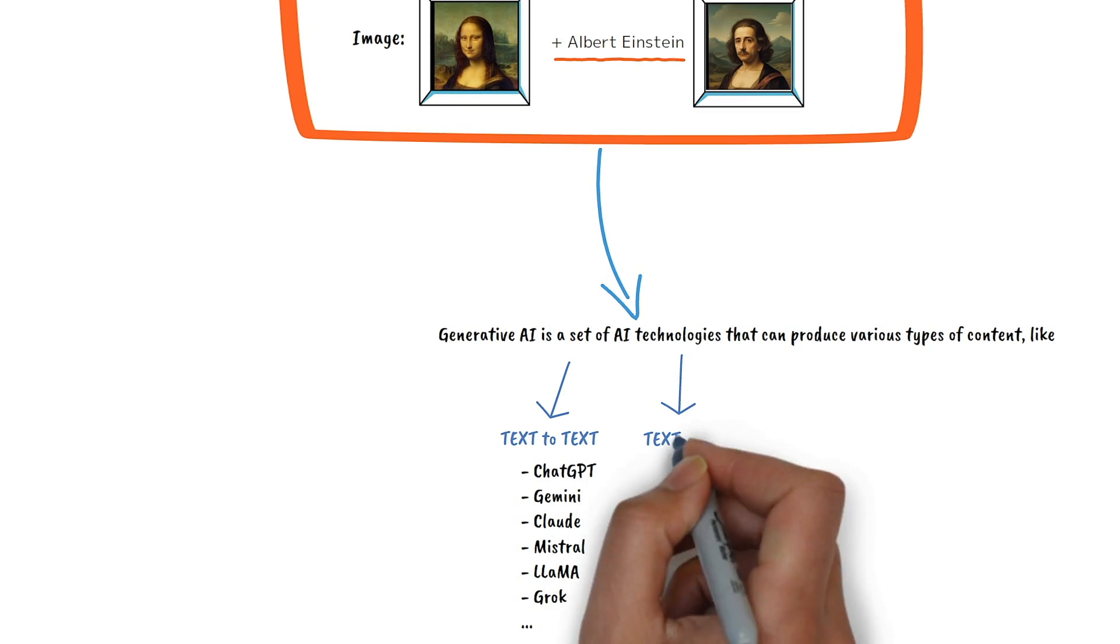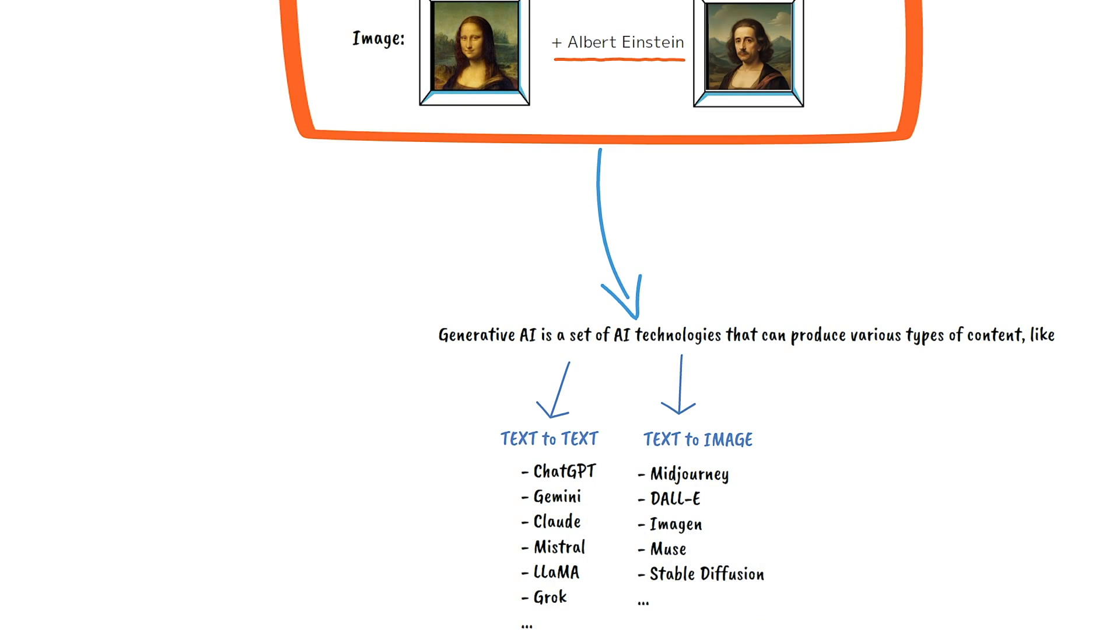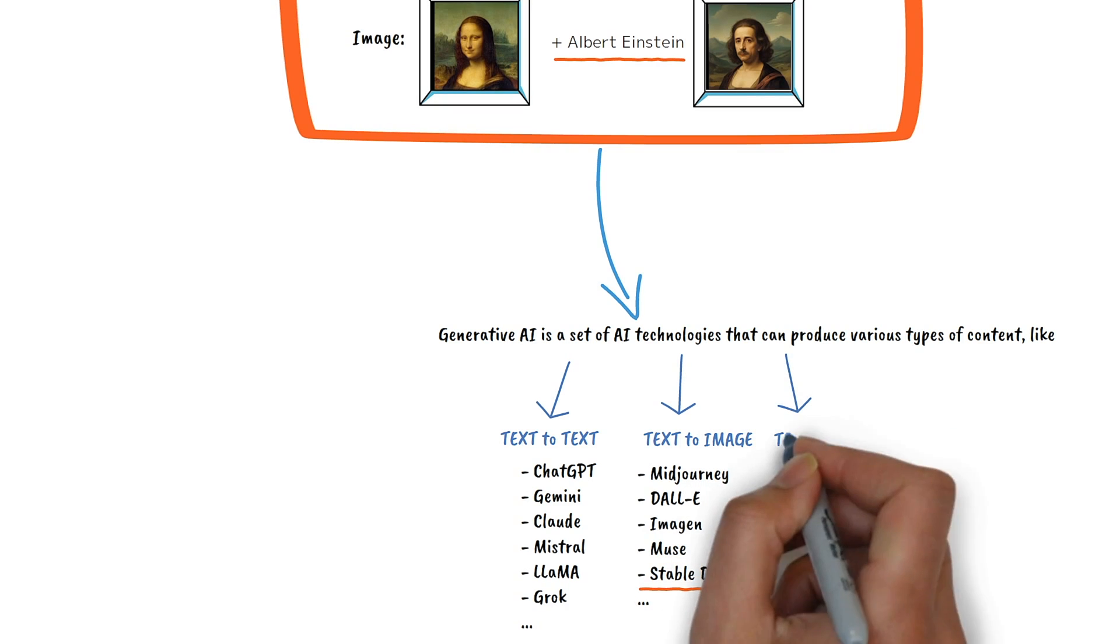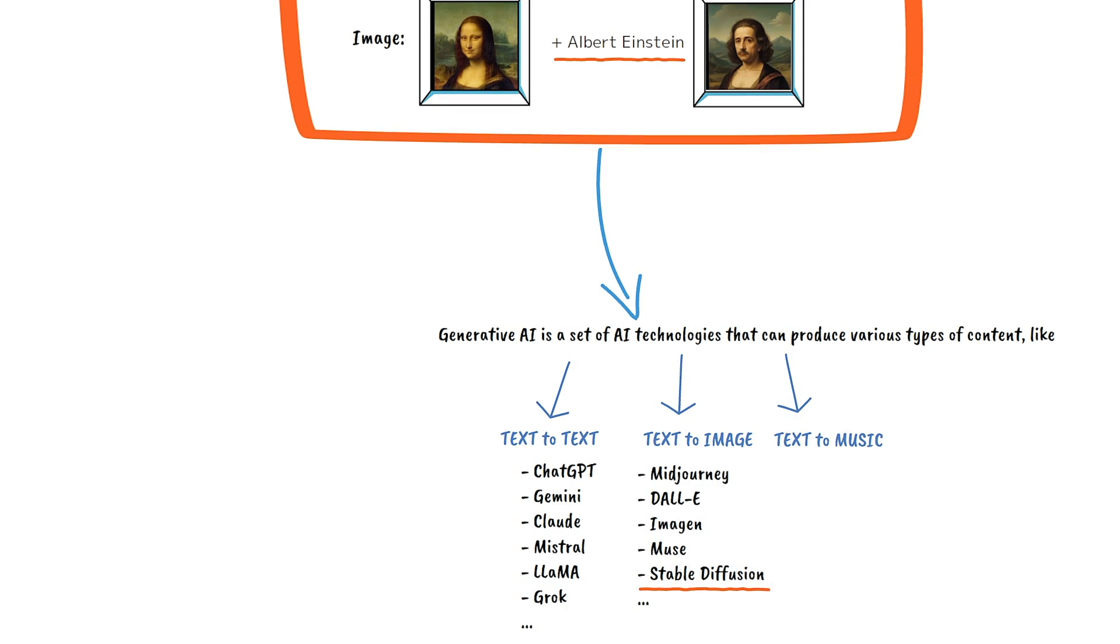Then we have text-to-image tools like Midjourney, Dali, Imagine, Muse and of course Stable Diffusion. Then there's text-to-music with Music LM, Music Gen, Stable Audio and Suno.